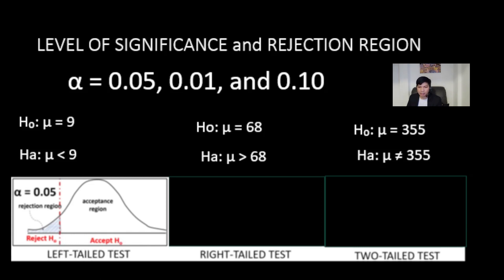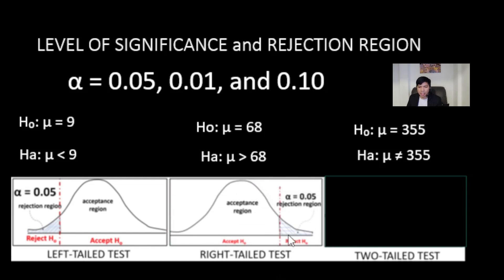It's the same thing with the right-tailed test. This is the rejection region and the unshaded region is the fail to reject region. If the computed value falls below the critical value, then we fail to reject the null hypothesis. But if the computed value is higher than the critical value, then we reject the null hypothesis.